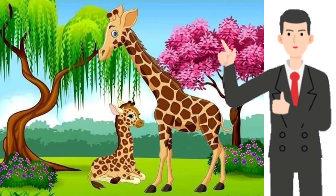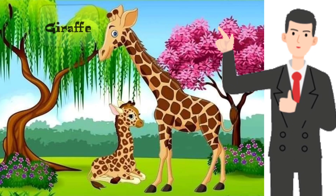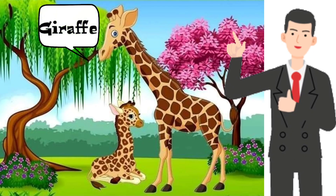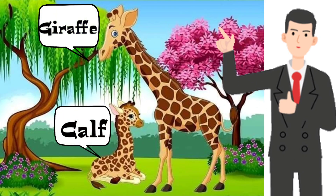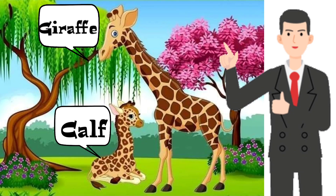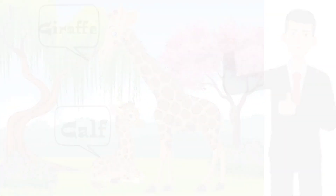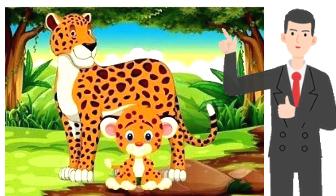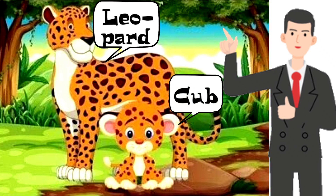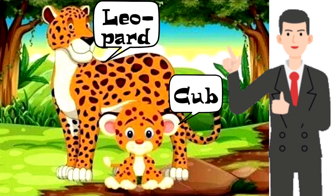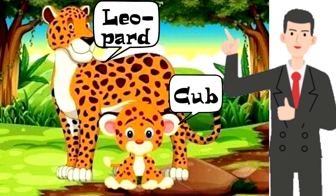This is Giraffe and this is Calf. Young one of giraffe is Calf. Leopard, Cub. Young one of leopard is called Cub.